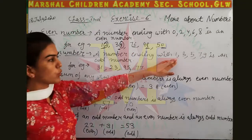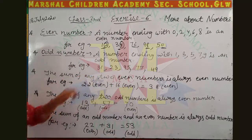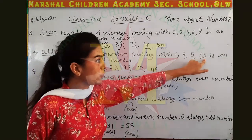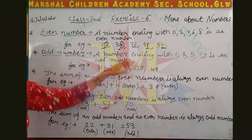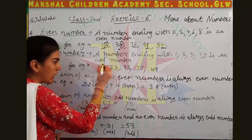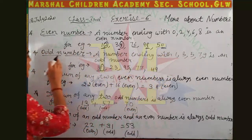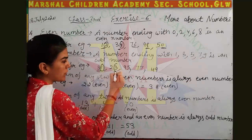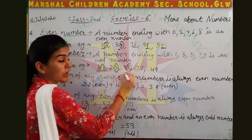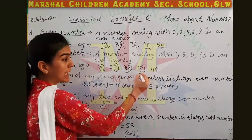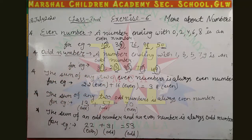An odd number is a number ending with one, three, five, seven, or nine. For example, 31 — the ending number is one, so it is an odd number. 23 ends with three — odd number. 95 ends with five, 77 ends with seven. These all numbers are odd numbers.